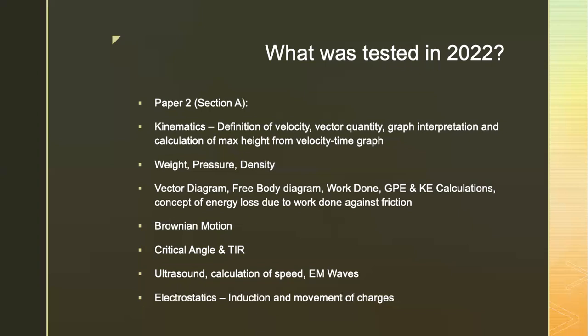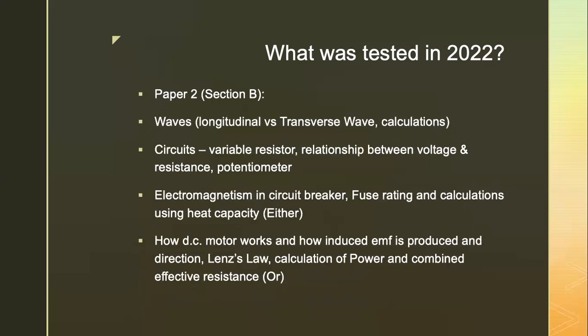Brownian motion was tested. In the topic of light, only critical angle and TIR — which stands for total internal reflection — was assessed. This was followed by ultrasound involving calculation of speed and some knowledge on EM waves. The last question of Section A is on electrostatics, where students are to explain how induction took place and explain the movement of charges.